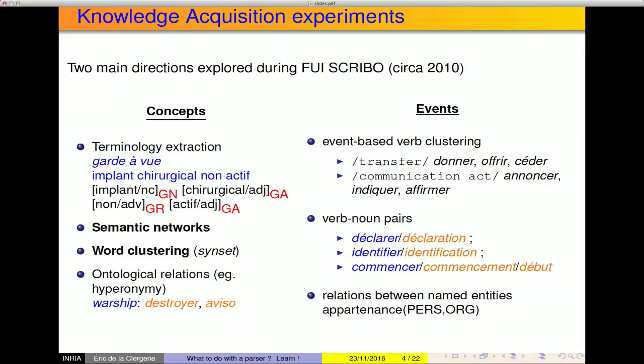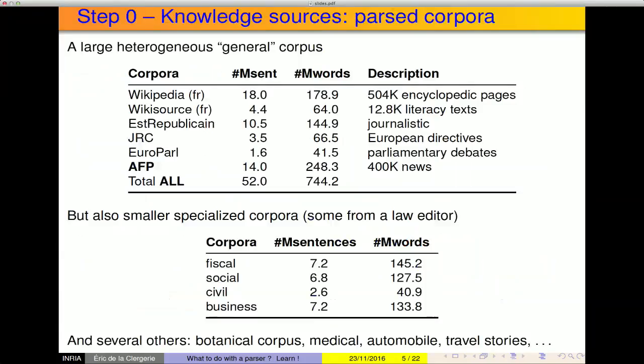We also wanted to talk about events — the notion of events represented by verbs. For example, a group of verbs denoting the same type of events, such as verbs of transfer: to offer, to communicate, to indicate, to affirm. Also, the fact that a verb can sometimes be represented by a nominal equivalent — it's important to be able to move from one to the other. And also, to detect the relations that could exist between named entities; for example, the fact that a person belongs to a certain organization.